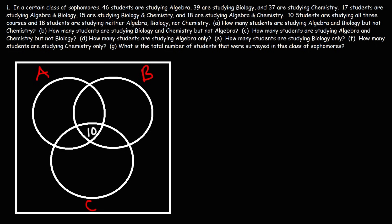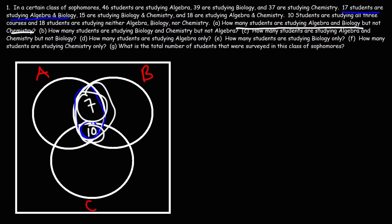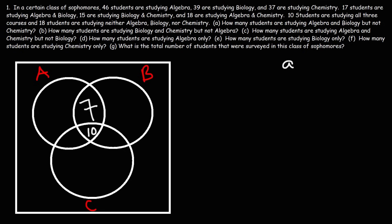The next number to focus on is the 17 students studying algebra and biology — that's the intersection of circles A and B highlighted in blue. We have 10 who are studying all three, so 17 minus 10 gives us 7. That's the answer for Part A: 7 students are studying algebra and biology but not chemistry.